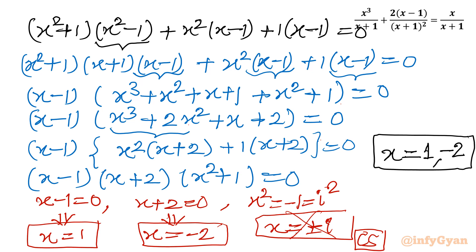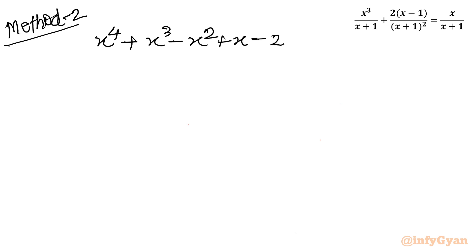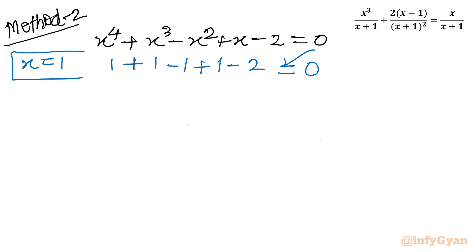Now let us consider Method 2, the conventional method. After simplification the equation is x⁴ + x³ − x² + x − 2 = 0, and I will use synthetic division. Adding all coefficients: 1 + 1 − 1 + 1 − 2 = 0. So putting x = 1 makes the equation 0, meaning x = 1 is a base solution.